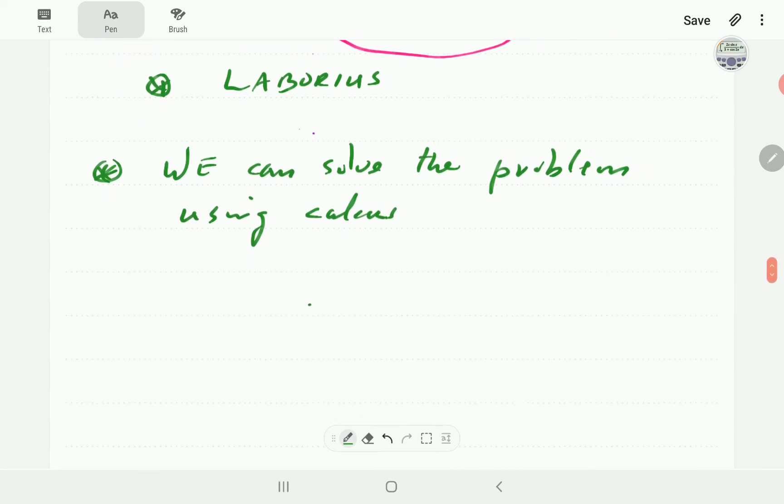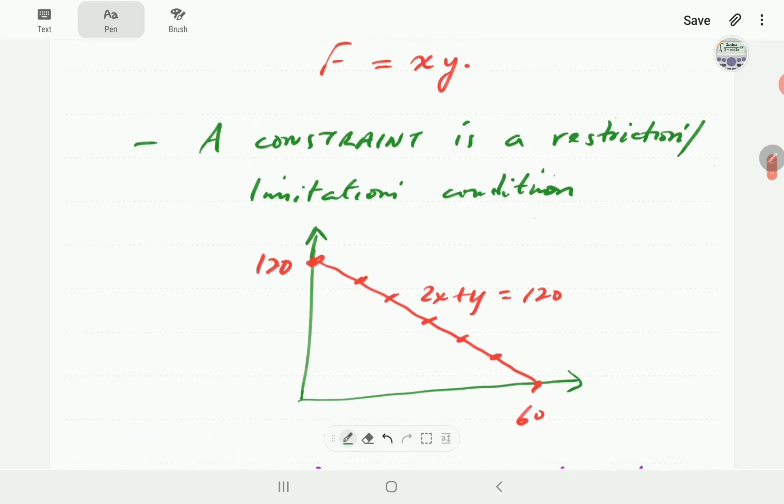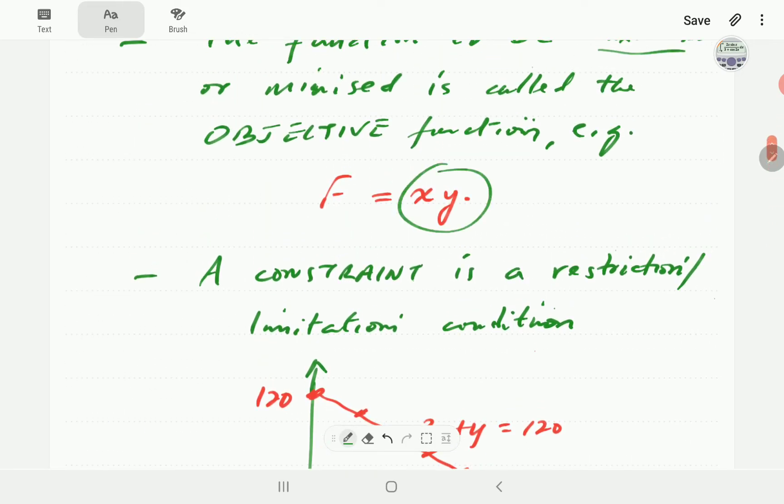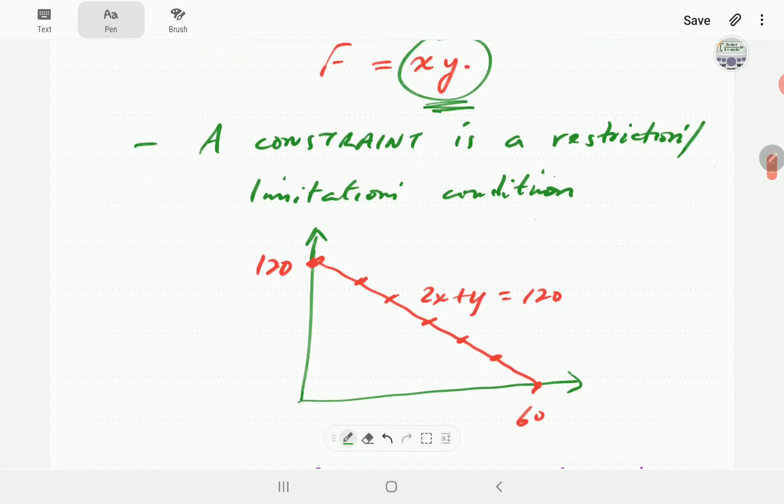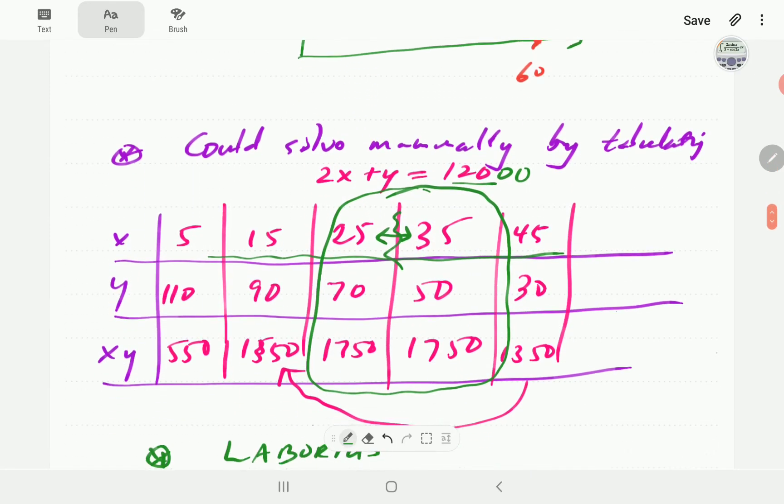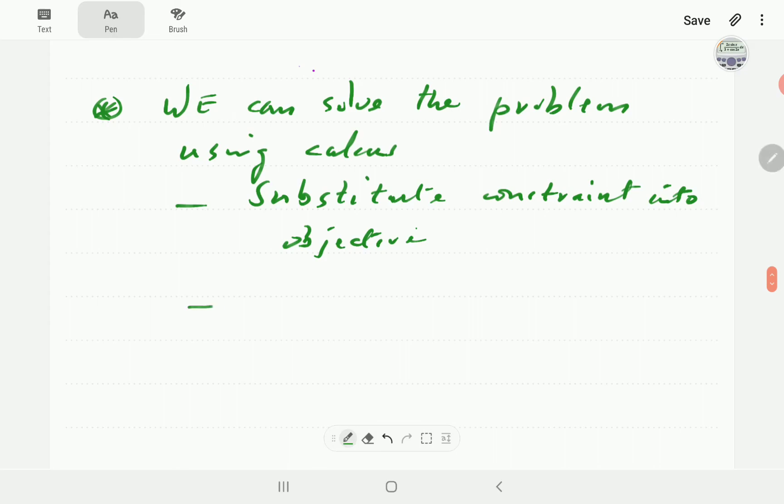What are going to be the steps involved if we're using calculus? The first thing we're going to have to do is to substitute the constraint into the objective function. If we use the objective function, then we can express this in terms of just one variable, either x only or y only.